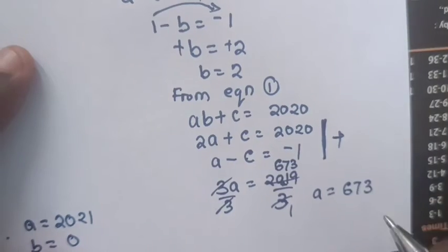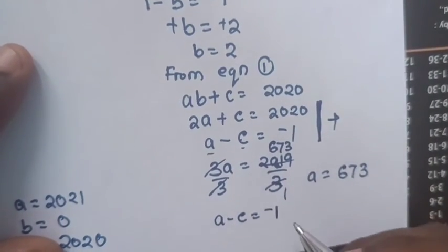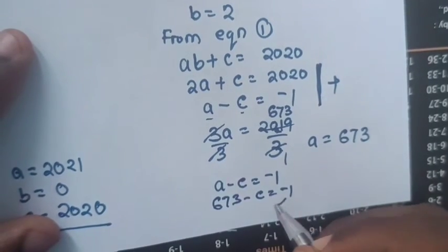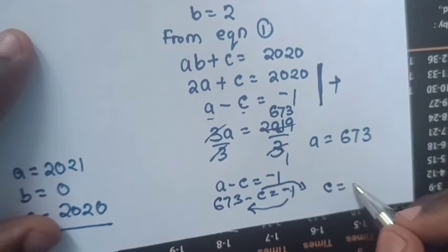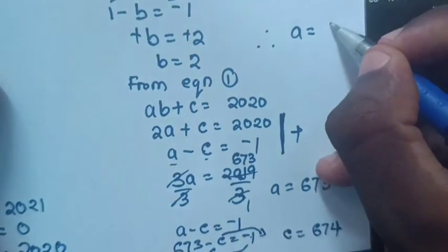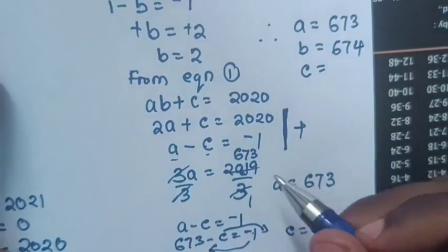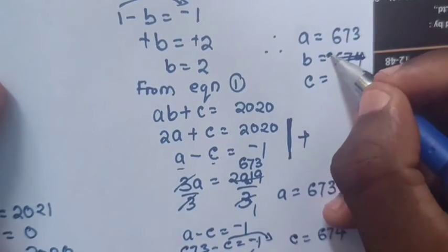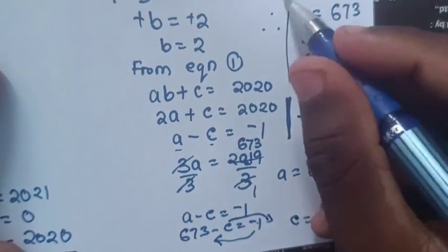From A minus C equals negative 1, we solve simultaneously by elimination. Adding the two equations: 2A plus A gives 3A, C cancels, and 2020 minus 1 gives 2019. Dividing by 3, A equals 673. Then from A minus C equals negative 1, C equals A plus 1 equals 674. Therefore in Case 2: A equals 673, B equals 2, and C equals 674.